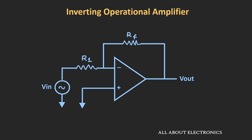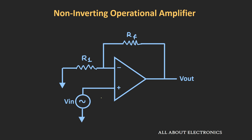In the last video we had seen the inverting op-amp configuration, and in that configuration we had seen that using negative feedback we can control the gain of this op-amp. In that configuration we applied the input to the inverting terminal and grounded the non-inverting terminal. Now let us see what happens when we apply the input to the non-inverting terminal. If we apply the input to the non-inverting terminal and ground the inverting terminal, this kind of configuration is known as the non-inverting op-amp configuration, because here the output and input are in phase.